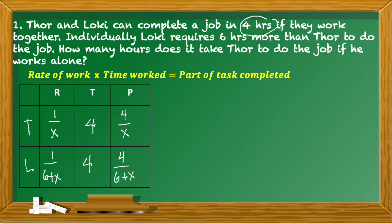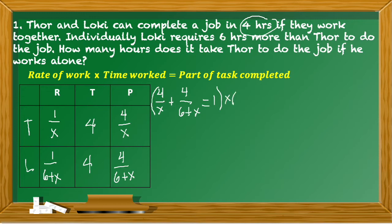For this type of problem, remember that if two people work together they are finishing one particular job, so the parts sum to 1. We have: 4/x + 4/(6 + x) = 1. To simplify, we multiply through by the LCD which is x(6 + x).